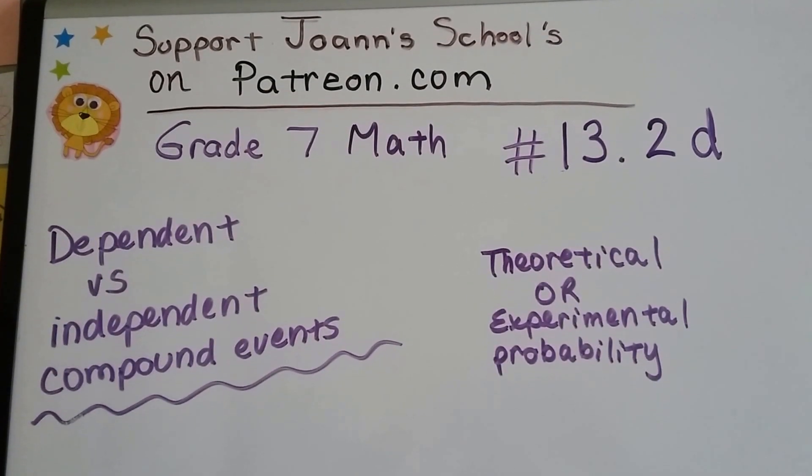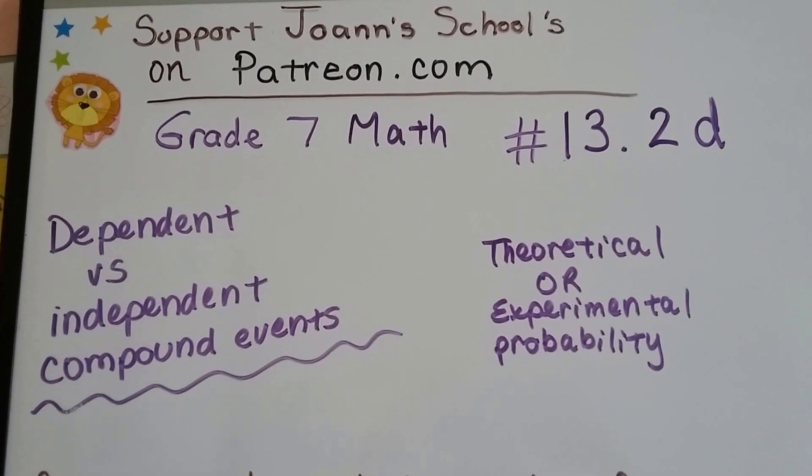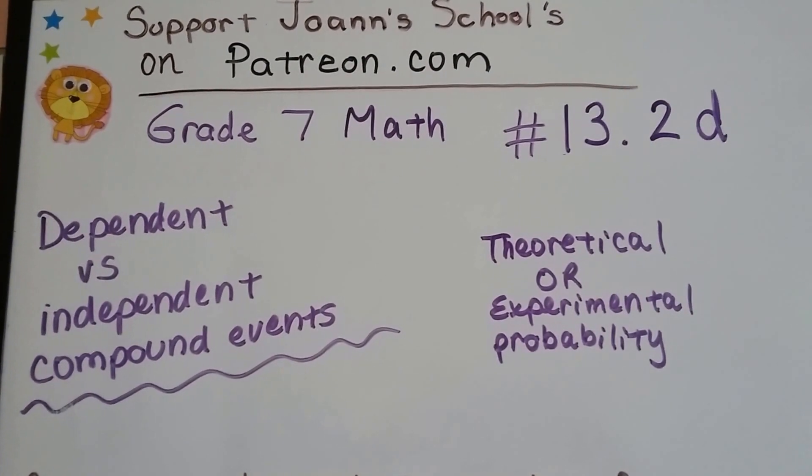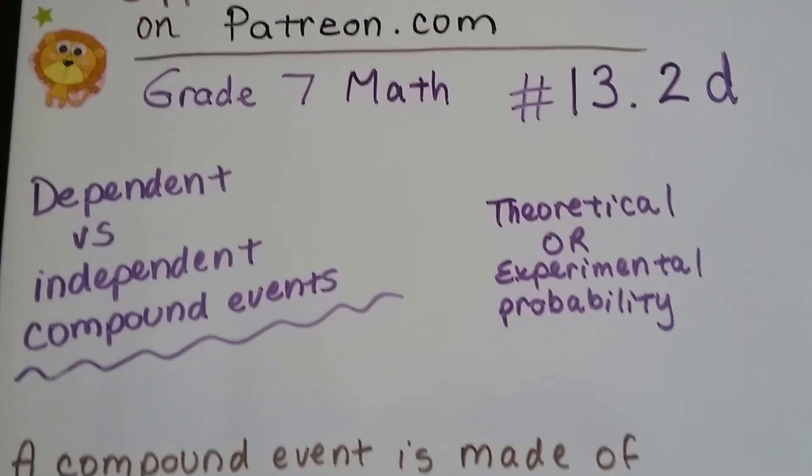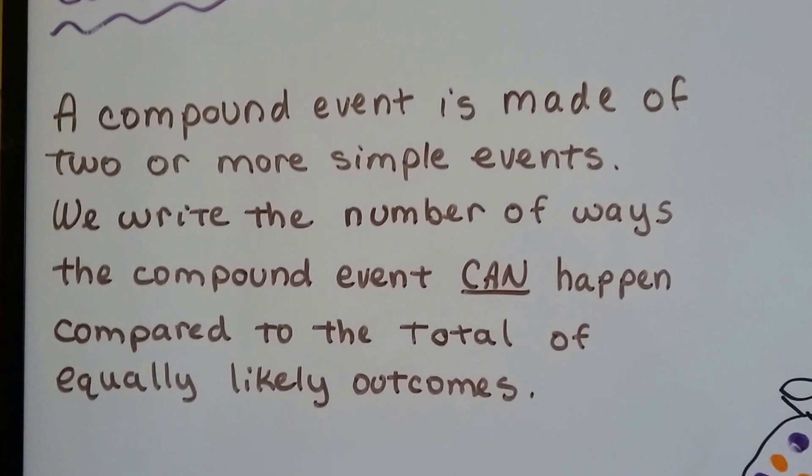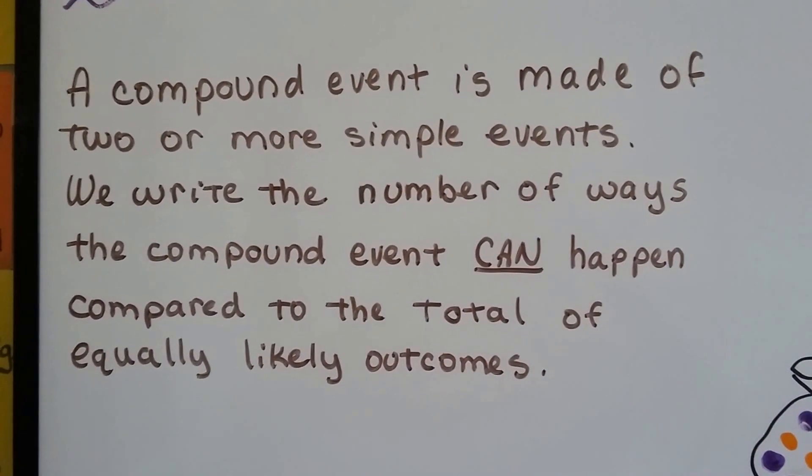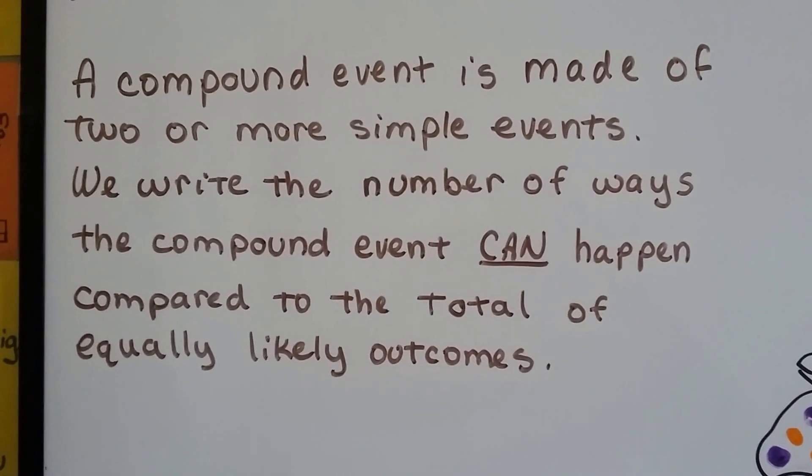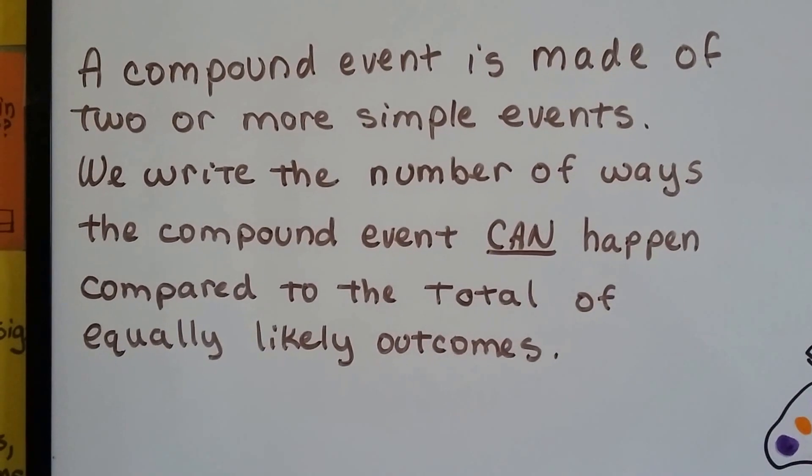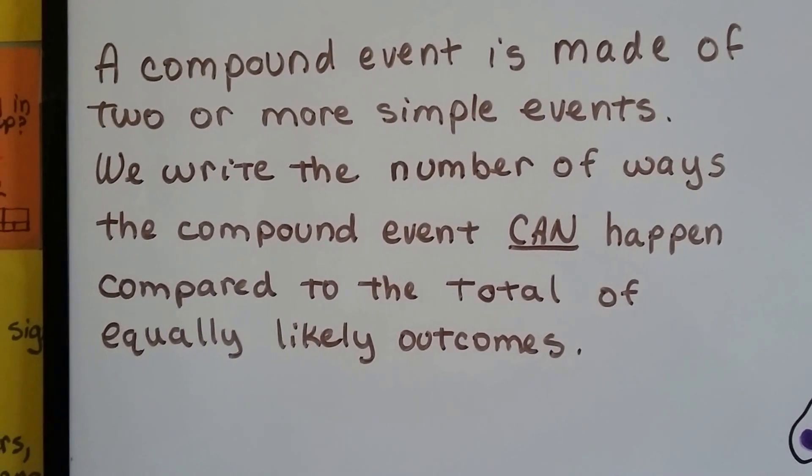Grade 7 math number 13.2D, dependent versus independent compound events. This is for theoretical or experimental probability. A compound event is made up of two or more simple events. We write the number of ways the compound event can happen compared to the total of equally likely outcomes.